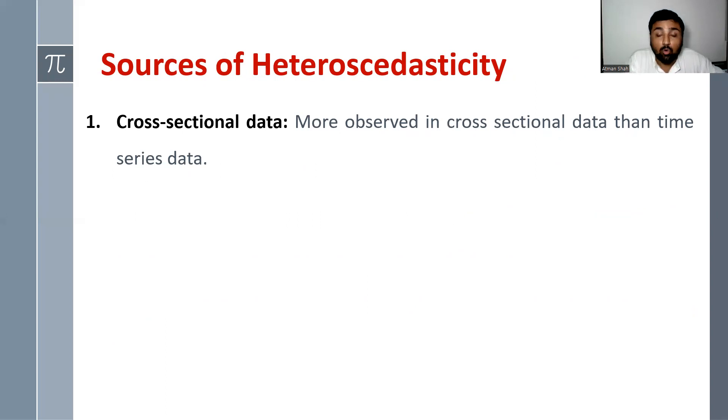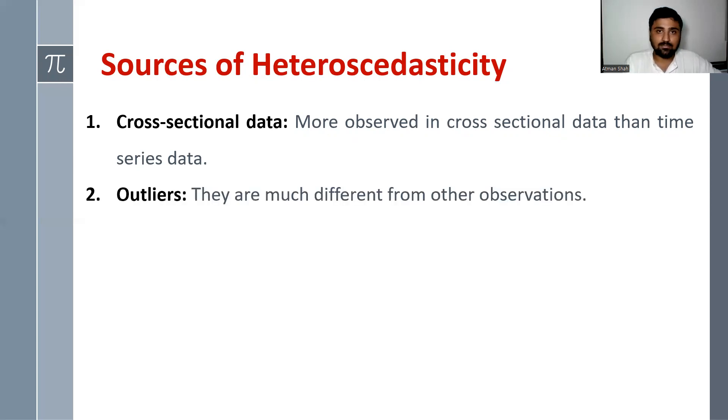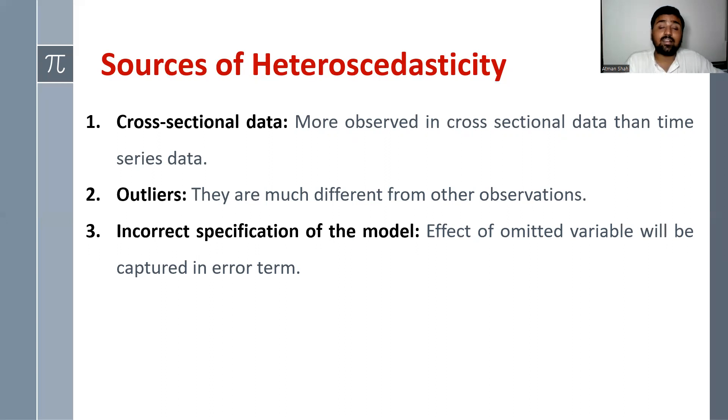What are the sources of heteroscedasticity? First is cross-sectional data — we are more likely to face this problem with cross-sectional data than time series data, though time series data is not immune. Second is outliers — values that are much different from other observations can cause the heteroscedasticity problem. Third is incorrect model specification, because the effect of omitted variables will be captured in the error term.